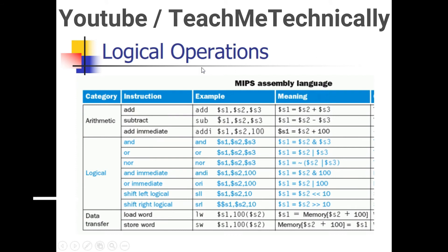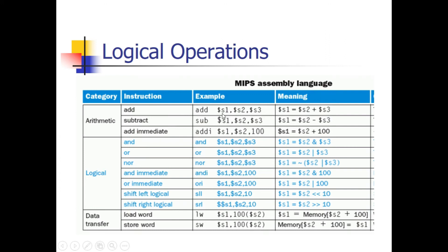Now I am going to explain how to identify which register is the destination register and which are source registers by reading the command. In an R-type instruction, when we write for example: add s1, s2, s3 — the very first register written, s1, is always the destination register in R-type. The second register is RS and the third register is RT.